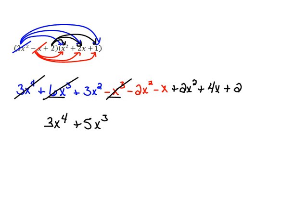Next would be x squareds. So I have actually three x squared terms. Plus 3 minus 2 would be 1. Plus 2 would be plus 3 of those x squareds. Now we have x's. Minus x plus 4x would be plus 3x. And then plus 2.